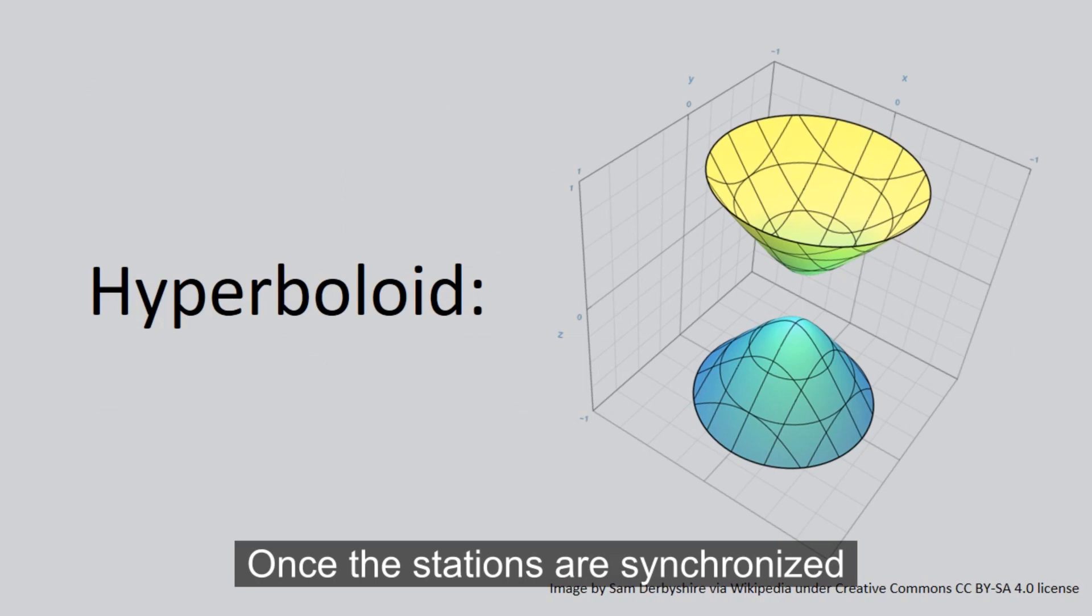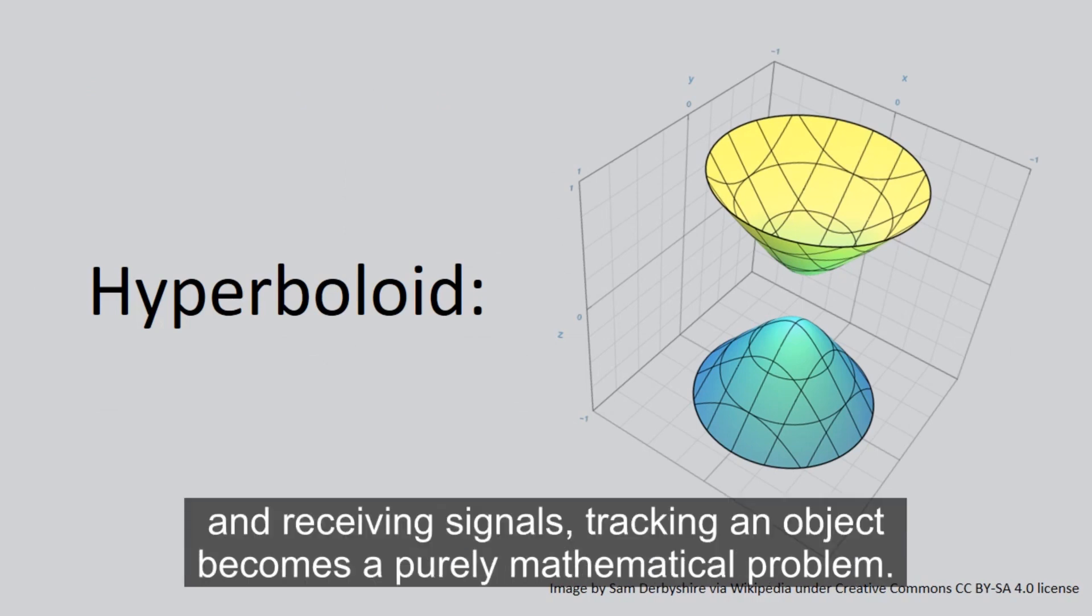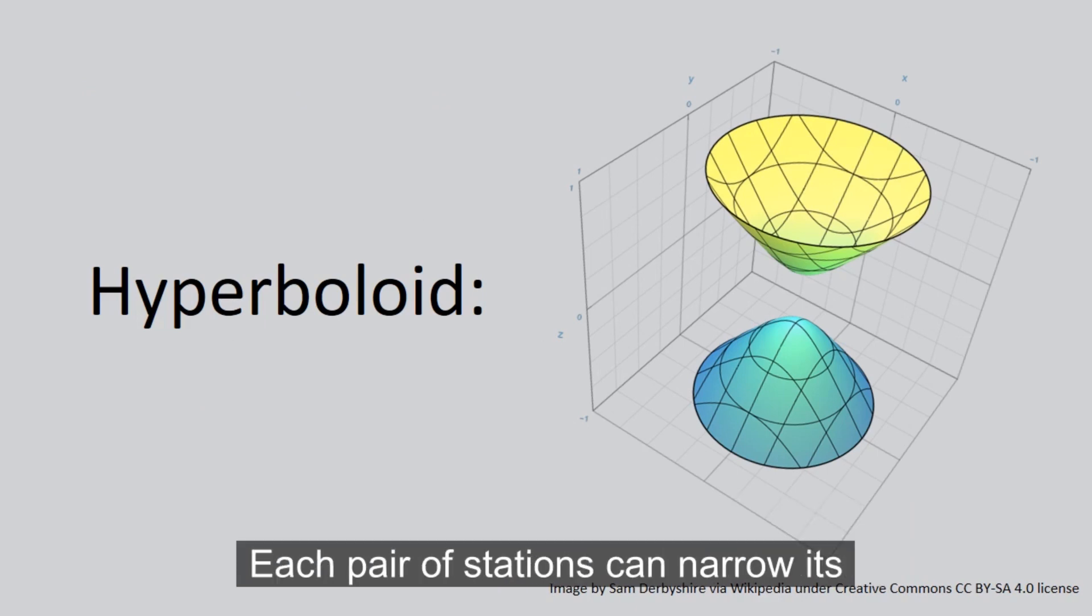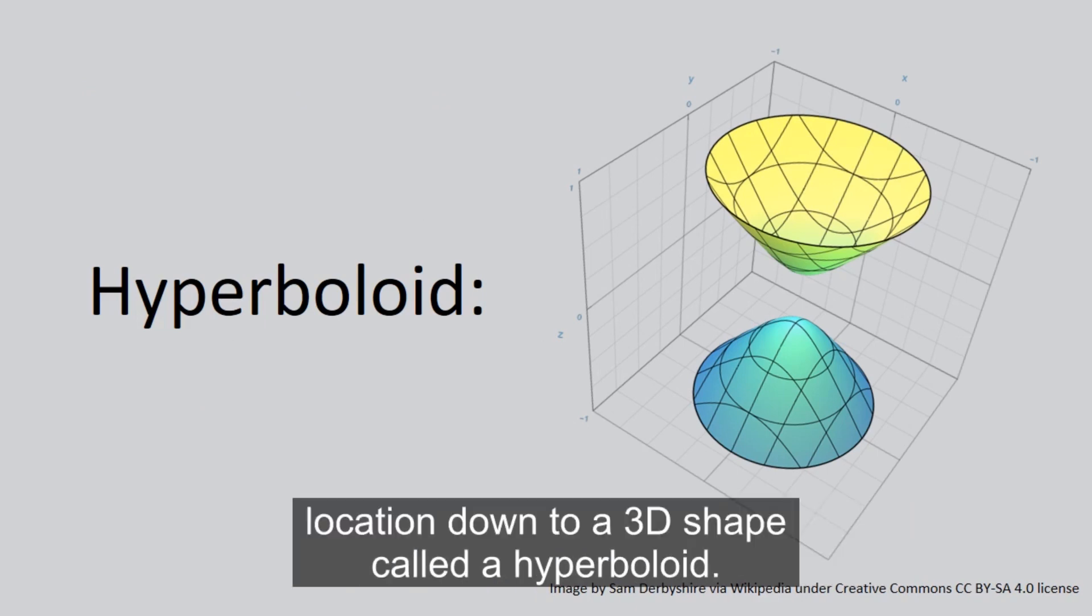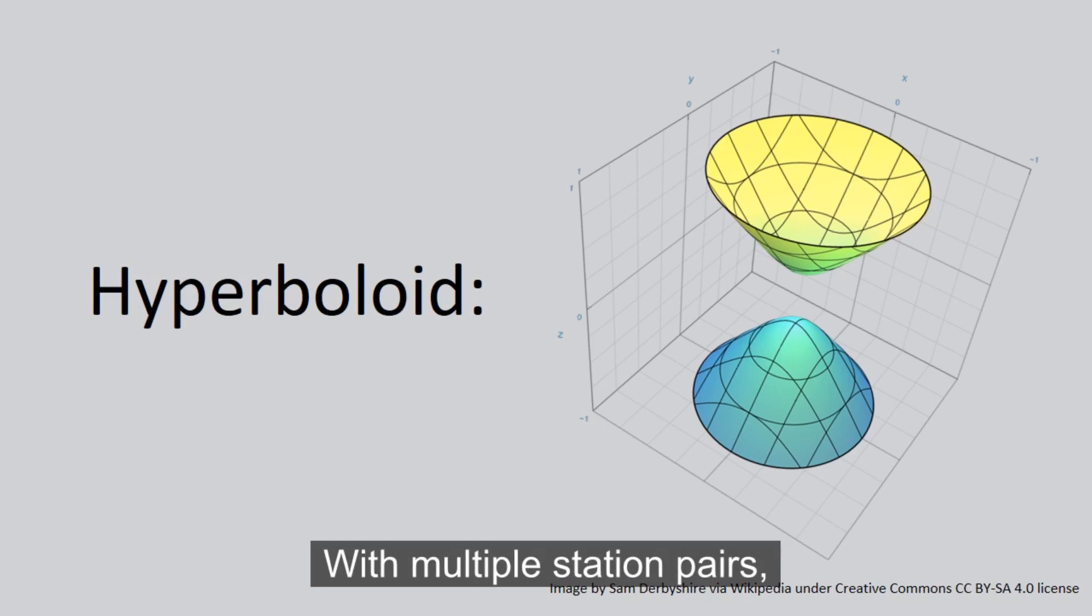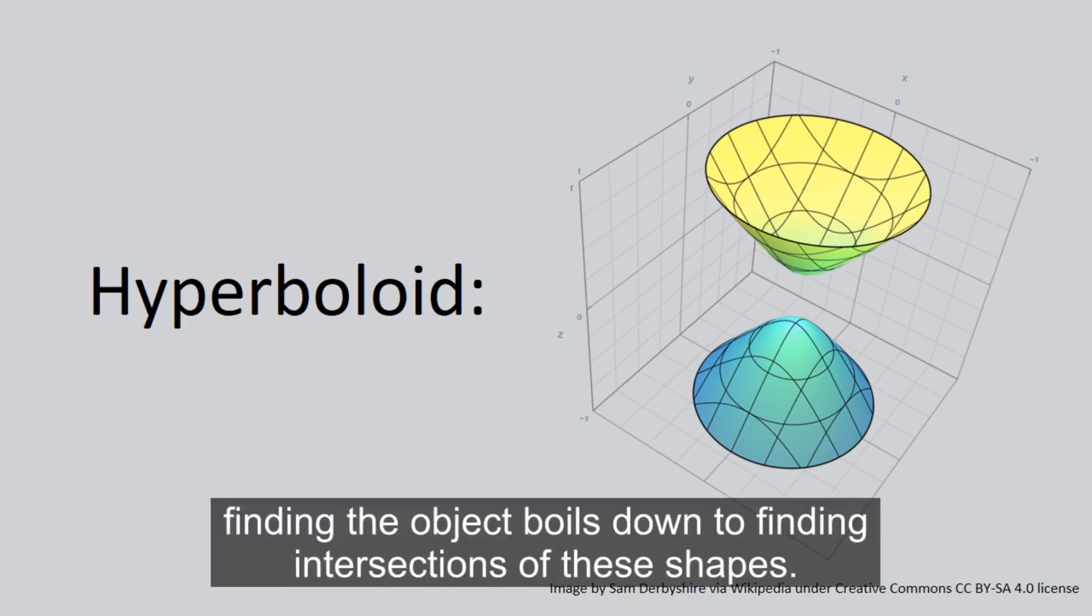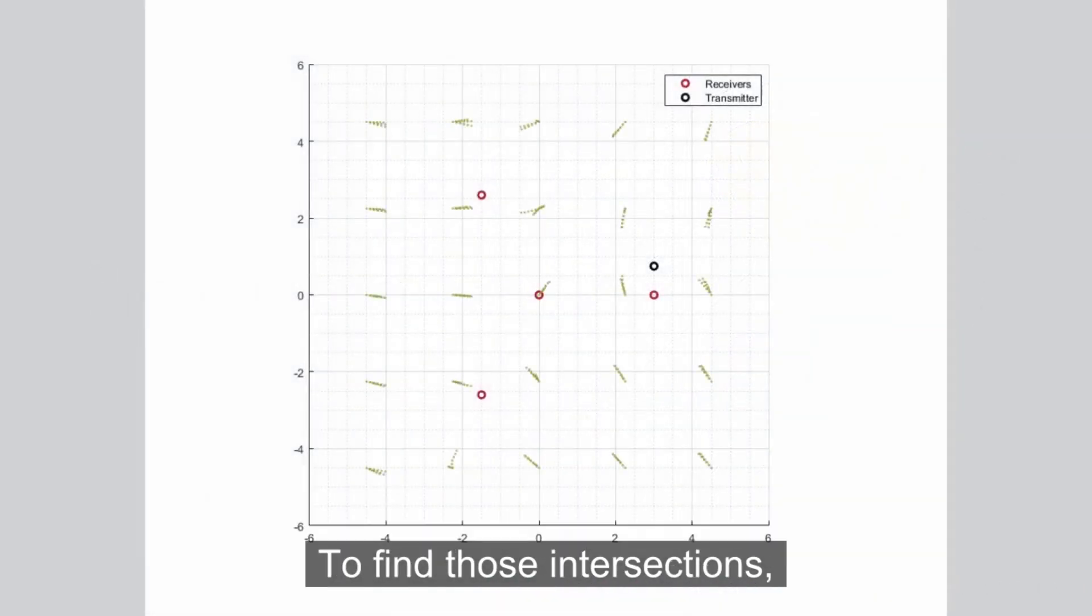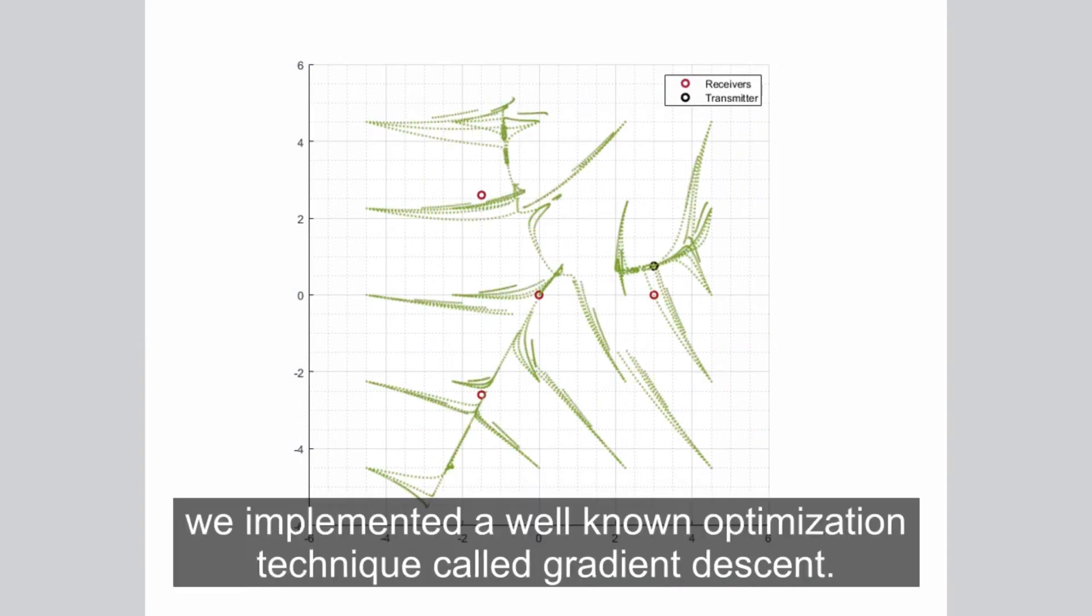Once the stations are synchronized and receiving signals, tracking an object becomes a purely mathematical problem. Each pair of stations can narrow its location down to a 3D shape called a hyperboloid. With multiple station pairs, finding the object boils down to finding intersections of these shapes. To find those intersections, we implemented a well-known optimization technique called gradient descent.